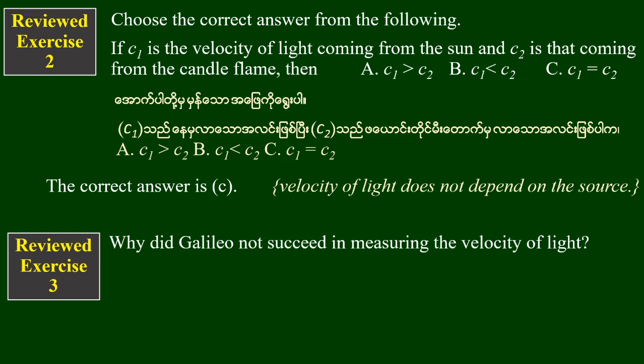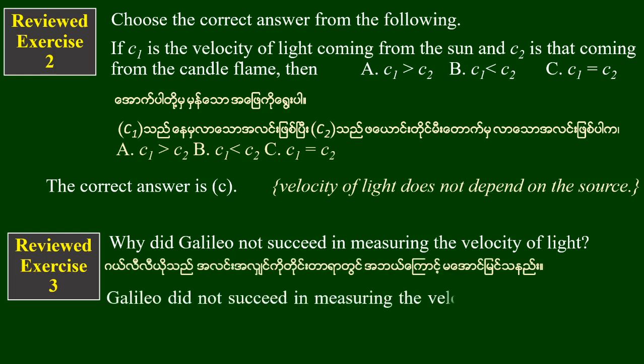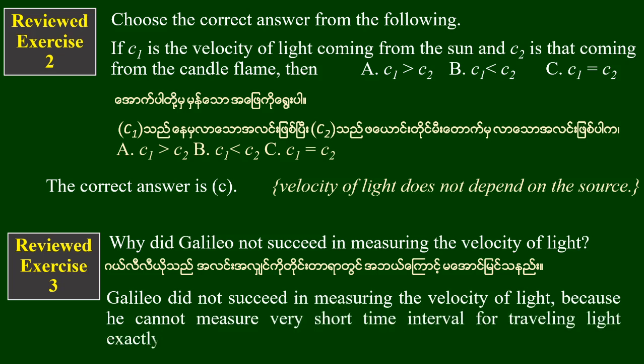The time interval was extremely short. Galileo could not measure very short time intervals for the traveling of light, so his experiment failed.